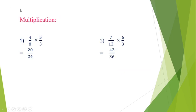Our third operation is multiplication. We have finished addition and subtraction. First example: 4 upon 8 multiplied by 5 upon 3. For multiplication, you don't need to worry about making denominators equal. Simply multiply numerator by numerator and denominator by denominator. 4×5 gives 20, and 8×3 gives 24, so the answer is 20 upon 24.